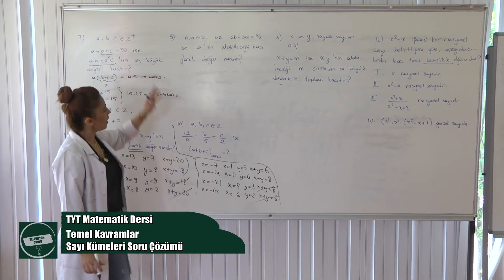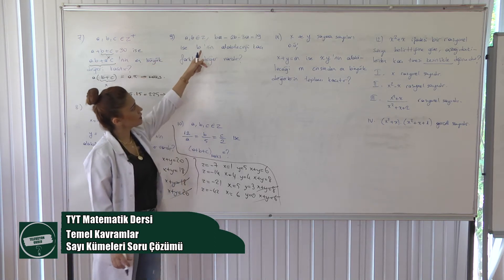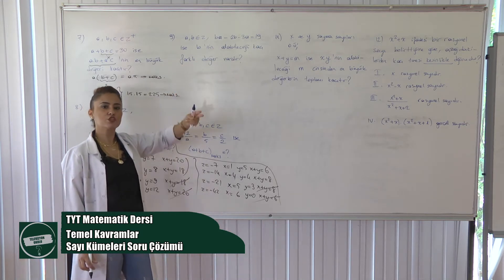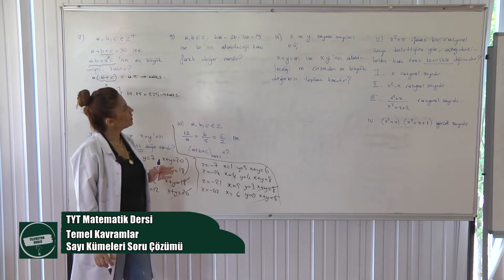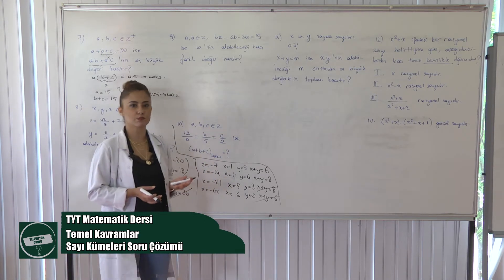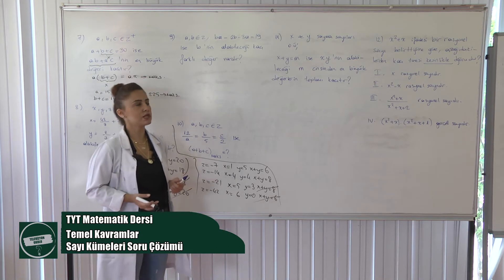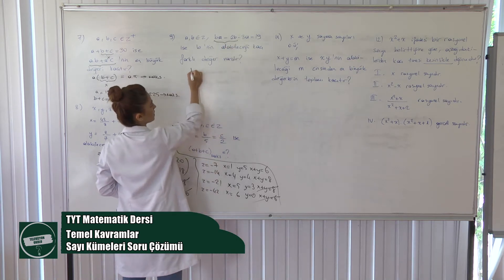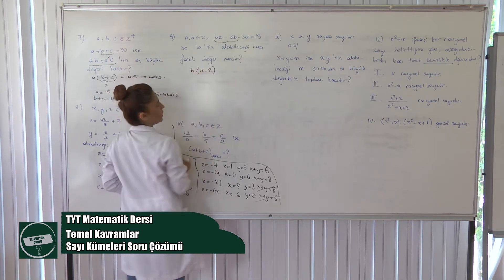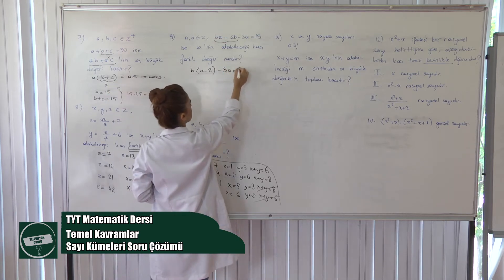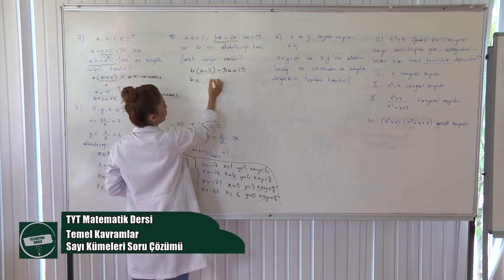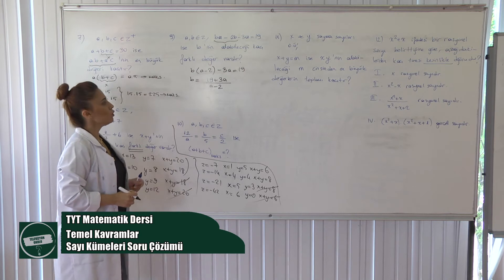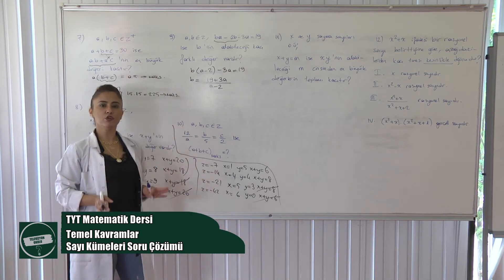Dokuzuncu sorumuzla devam ediyoruz. A, B tam sayı; B(A eksi 2) eksi 3A = 19 ise B'nin alabileceği kaç farklı değer vardır? Burada iki tane değişkenimiz var: A ve B. İstenilen değişkeni yalnız bırakın. Burada B'yi yalnız bırakmayı tercih ediyorum. Bu ifadeyi B parantezine alırsam B(A eksi 2) eksi 3A = 19 olur. B eşittir 19 artı 3A bölü (A eksi 2) olarak yalnız bıraktık. Bu noktadan sonra polinom bölmesi yapacağız.